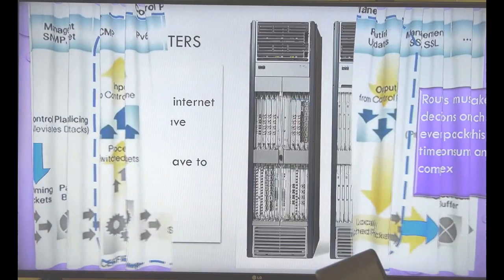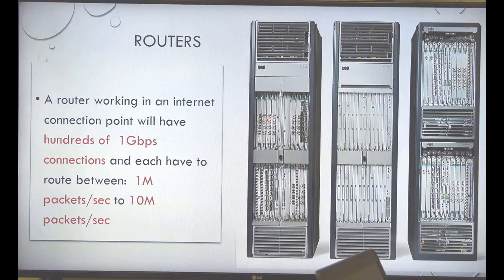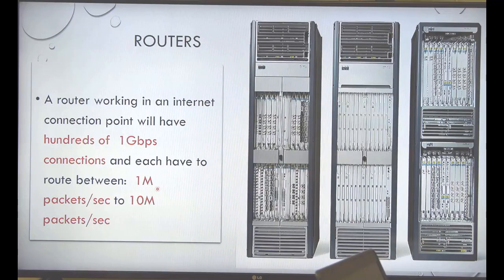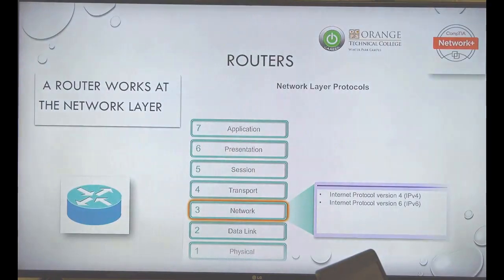When you take an ISP router, each connection on these bus bars is a gigabit or 10 gigabit. This is typically what you'll see in Tampa and Miami at internet connection points. With a gigabit connection, that router has to route between 1 million and 10 million packets per second — opening them up, inspecting them, finding the destination IP, checking the routing table, and sending them in the right direction. That's why they pay a million dollars for one.